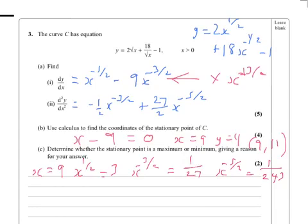I might need to use a calculator at some point, but I'll now chuck that into the d2y by dx squared bit. We get minus 1 half x to the minus 3 over 2 plus 27 over 2 x to the minus 5 over 2